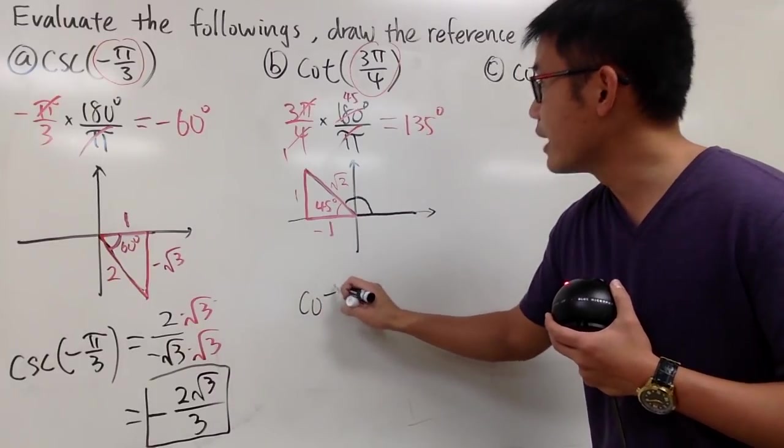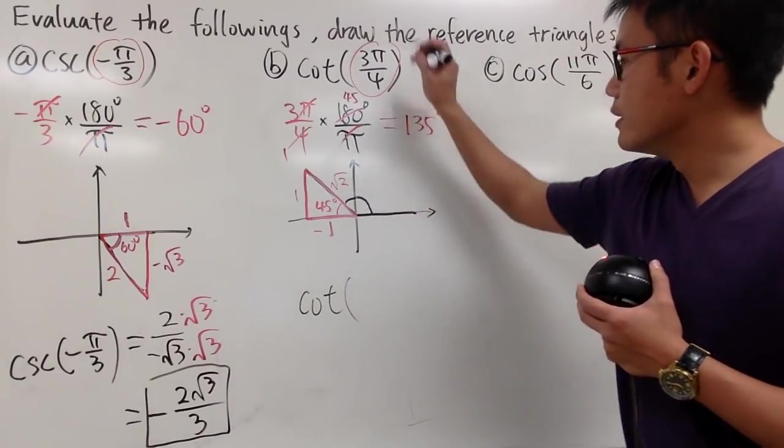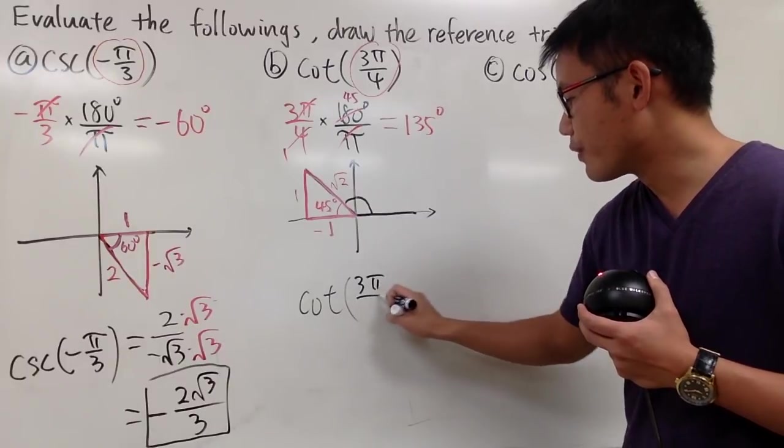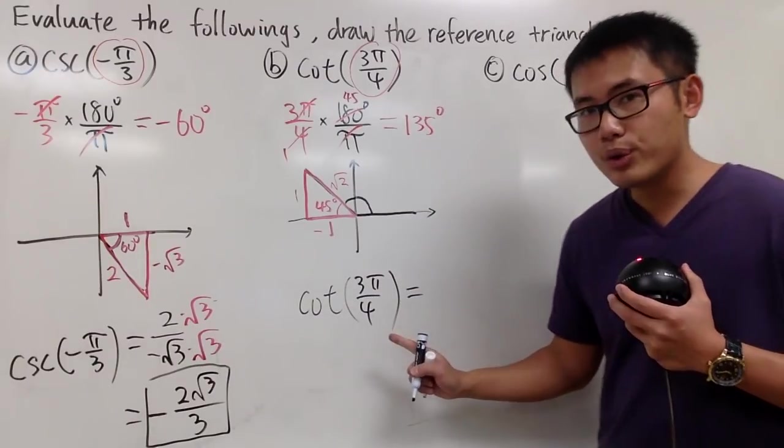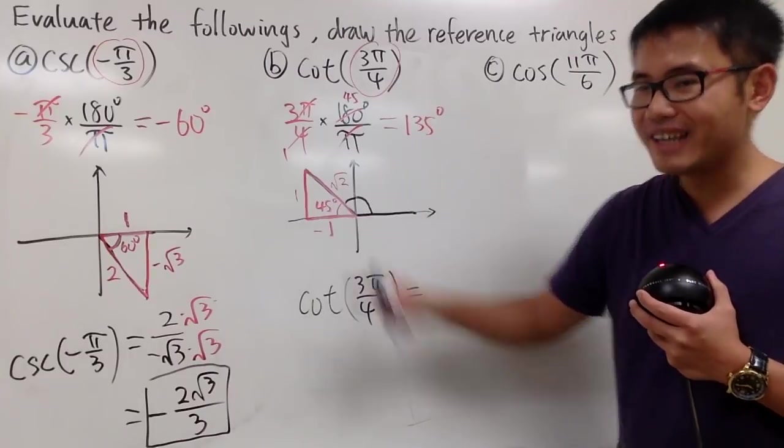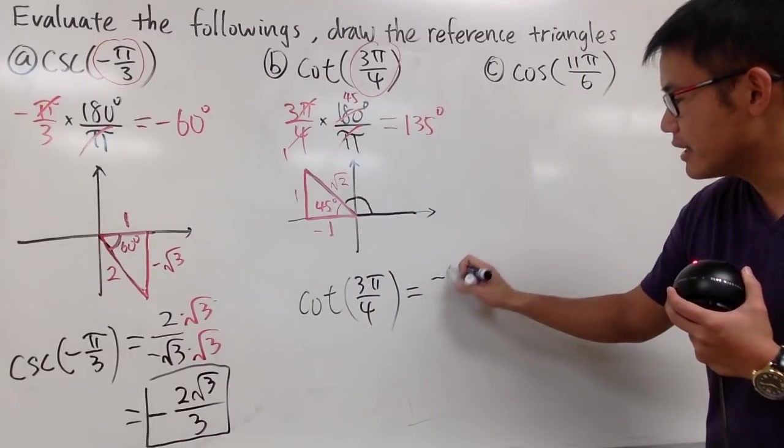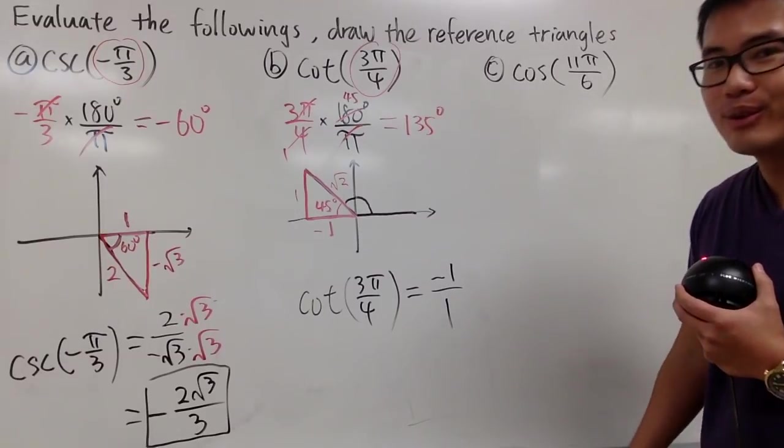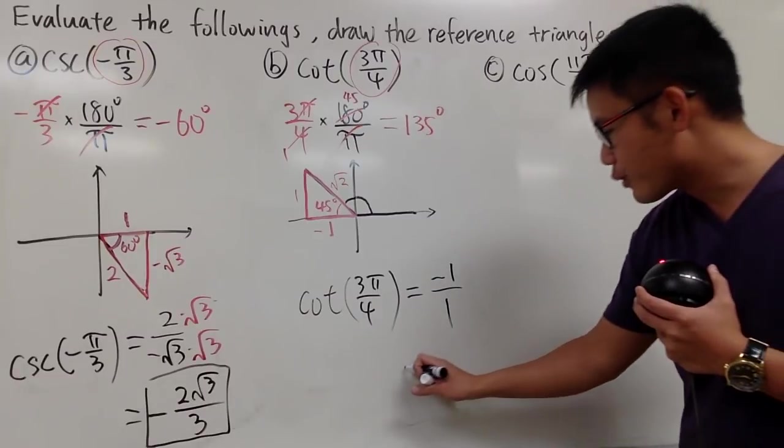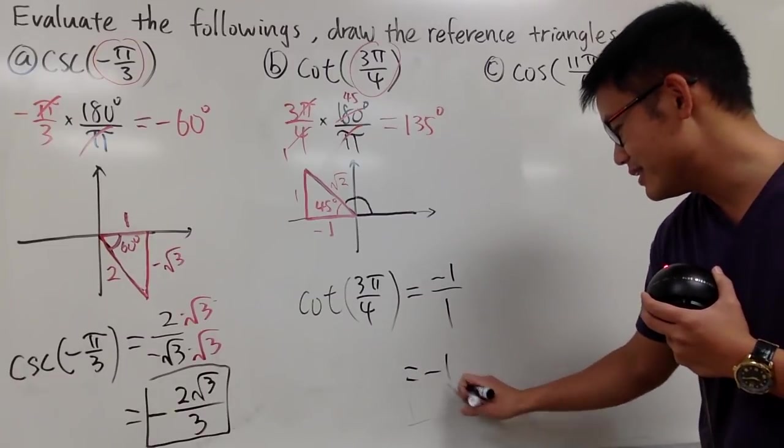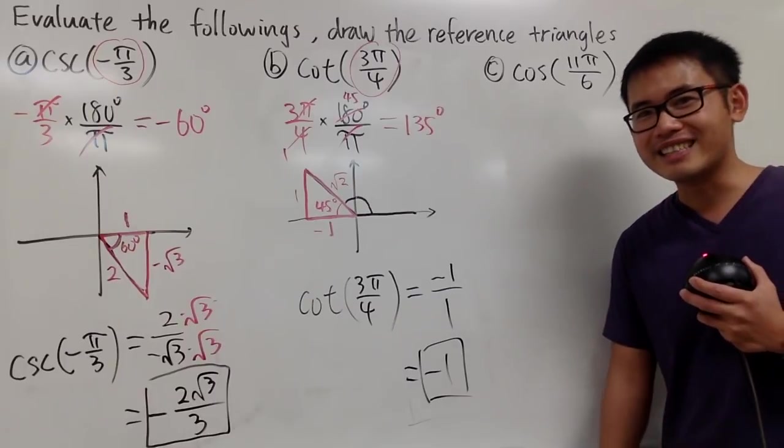To do the cotangent of 3 pi over 4, this right here is equal to x over y. So I will legitimately put it down as negative 1 over 1. Cotangent is x over y. And now we have this, we can just work this out, which is negative 1 in the end.